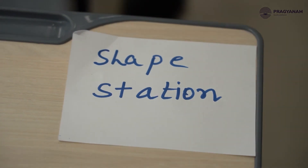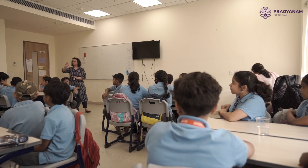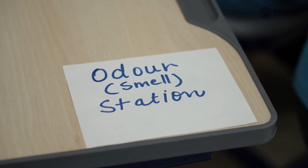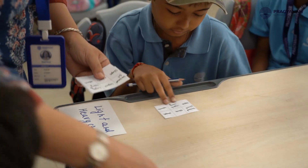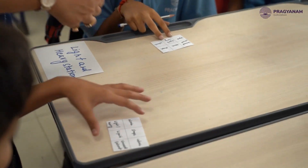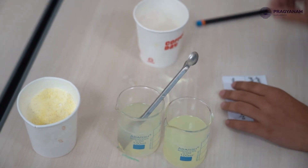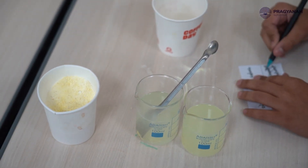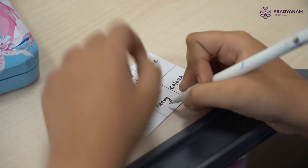There are different stations — a shape station, a universal solvent station. If you had something like shape or light and heavy on your bingo card, you had to go to that station, do the experiment, and then you could cross it out.